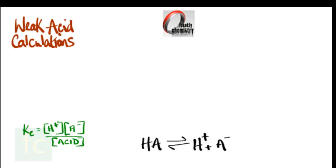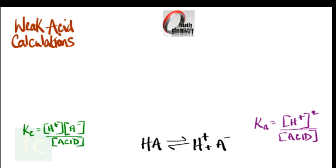The equilibrium expression Kc for that equilibrium is written as the concentration of hydrogen ions times the concentration of A⁻ ions over the concentration of the acid. Given that this is the equilibrium constant for the dissociation of a weak acid, we first change it from Kc to Ka, and then we can modify it. Since H⁺ and A⁻ are produced in equimolar amounts, we can modify the top line to simply read the concentration of hydrogen ions squared.